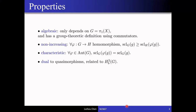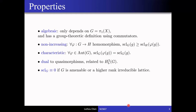Another important property is that it is dual to the so-called quasimorphisms, which are closely related to the second bounded cohomology of the group. This is called Bavard duality. It is a very powerful tool, but we will not go into the details today. I will mention two important corollaries: one is that certain groups have stable commutator length always zero — this is true for amenable groups or higher-rank irreducible lattices, like SL_n(Z) for n greater than or equal to 3. This will show up later as a condition in the main theorem.